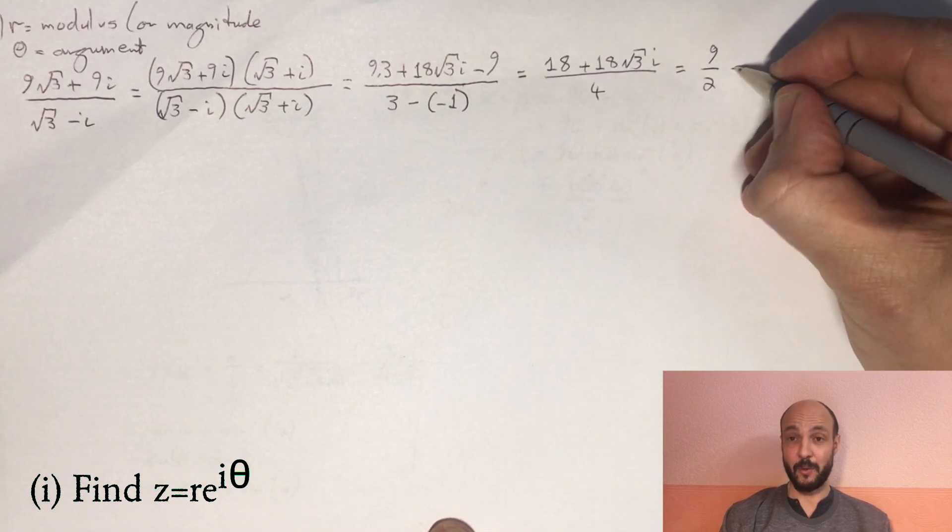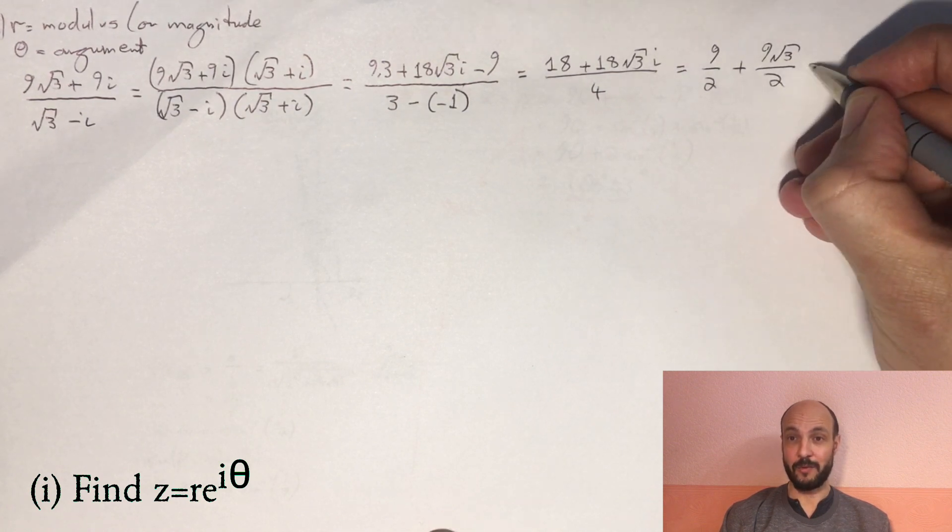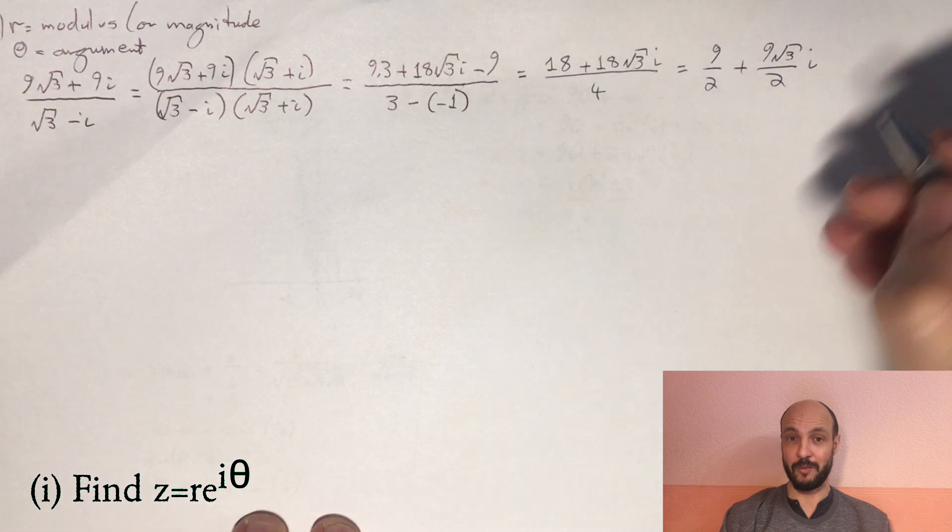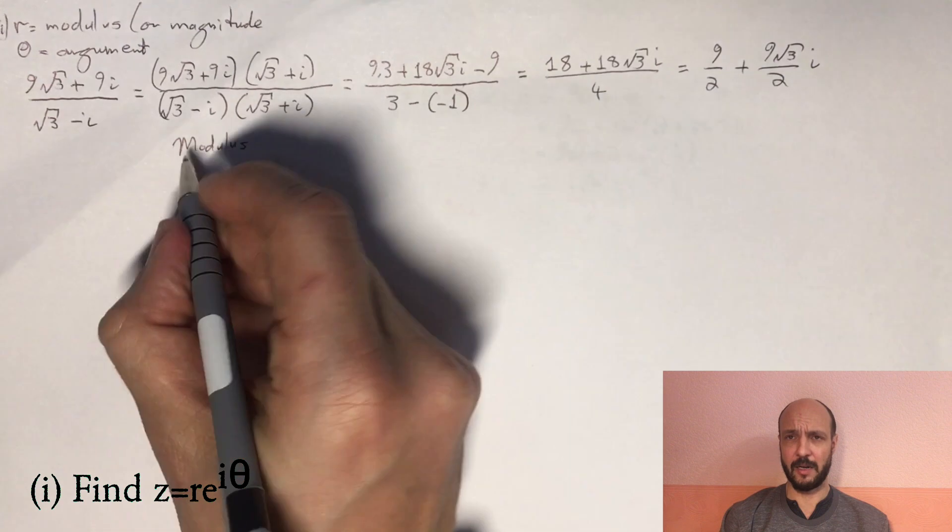And so we've got 18 over 4, which is 9/2, plus 18 over 4√3i, which is 9/2√3i. So that makes things a bit easier for us to get our modulus and our argument.